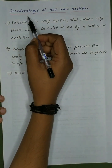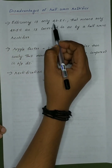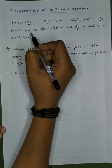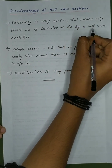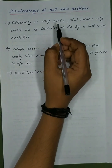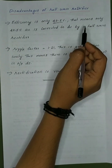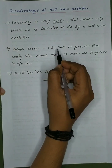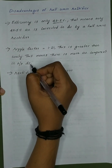So what is the significance of the ripple factor of a half-wave rectifier? Only 40.5 percent of AC is converted to DC by a half-wave rectifier, which is the main disadvantage. The ripple factor is 1.21, which is greater than unity. This means there is more AC component present in the output DC.